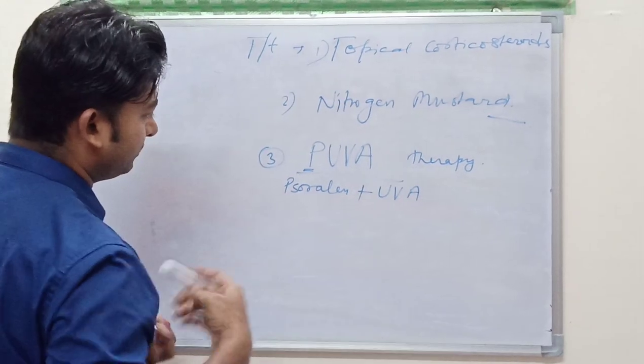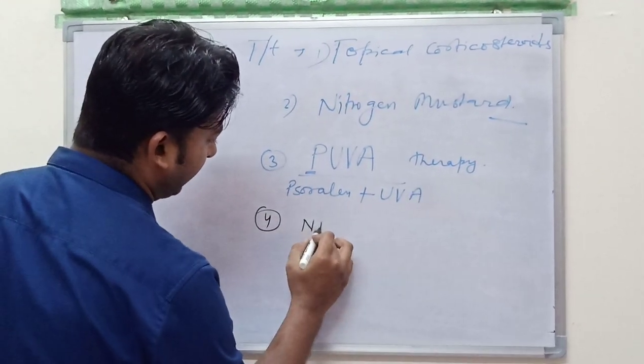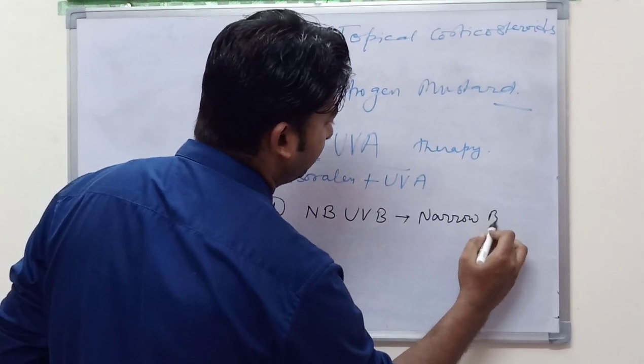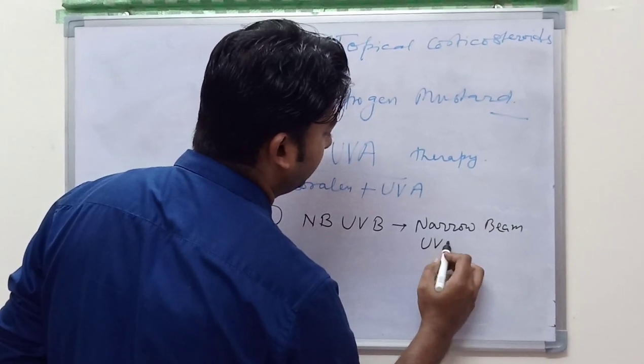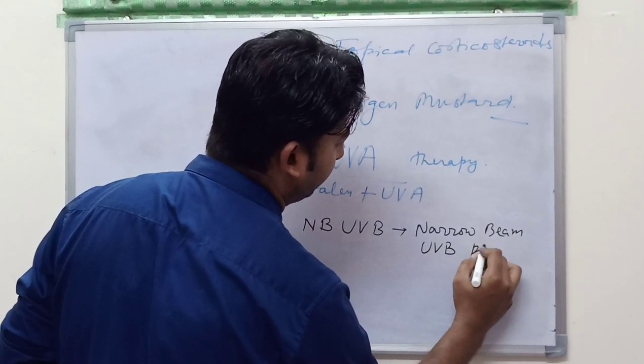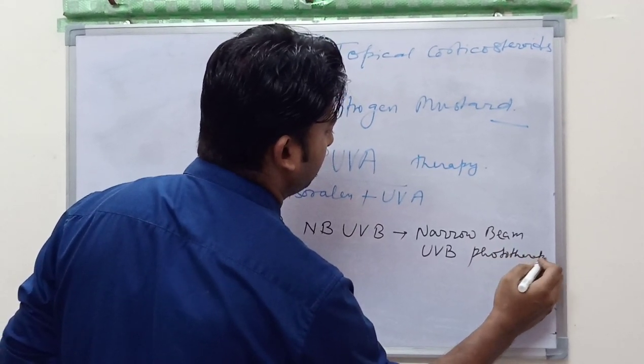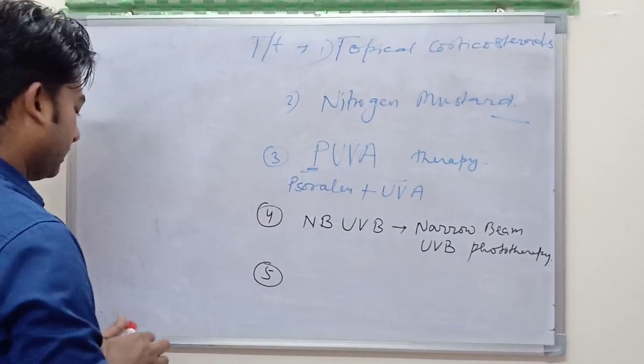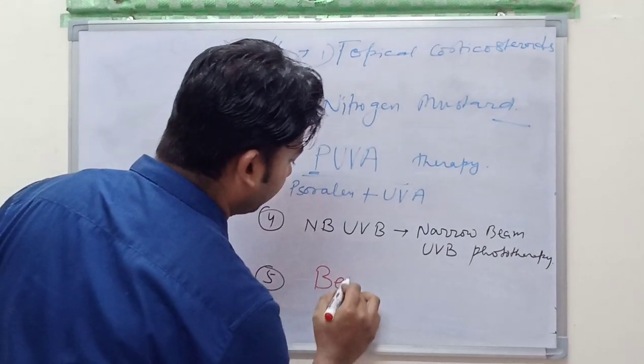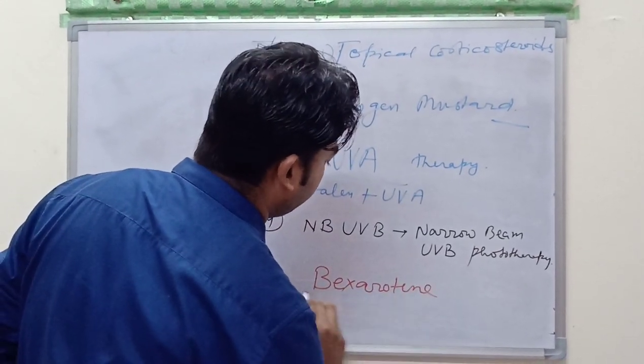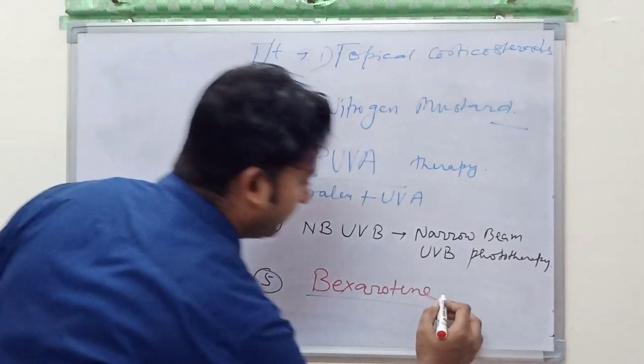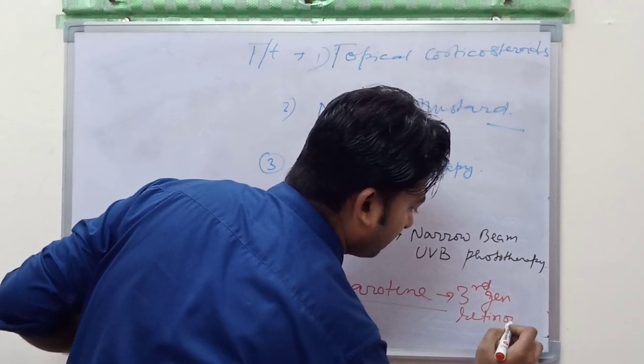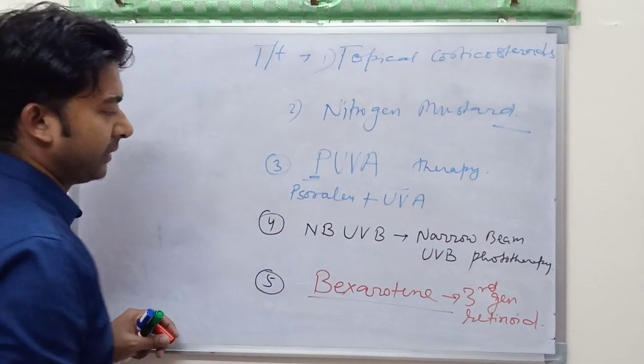Next we use narrow beam UVB, narrow beam UVB phototherapy. Bexarotene, this is third generation retinoid used in the treatment of mycosis fungoides. Pregnancy category comes in the X category, so it is contraindicated in pregnant women.